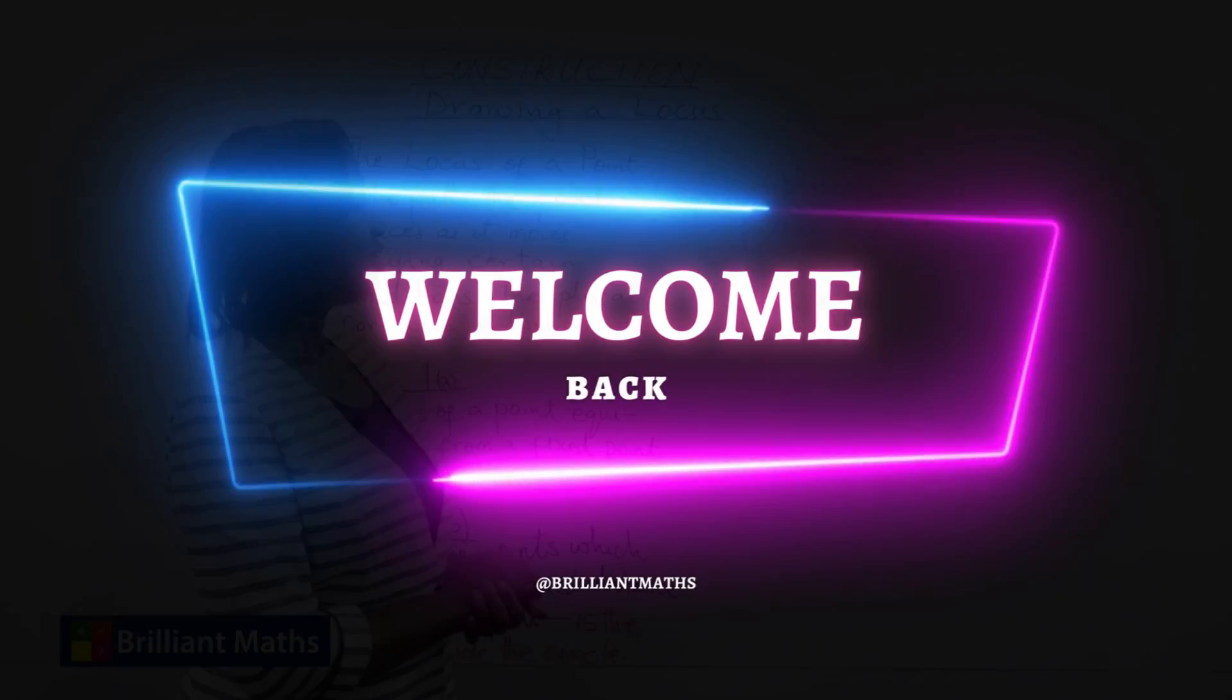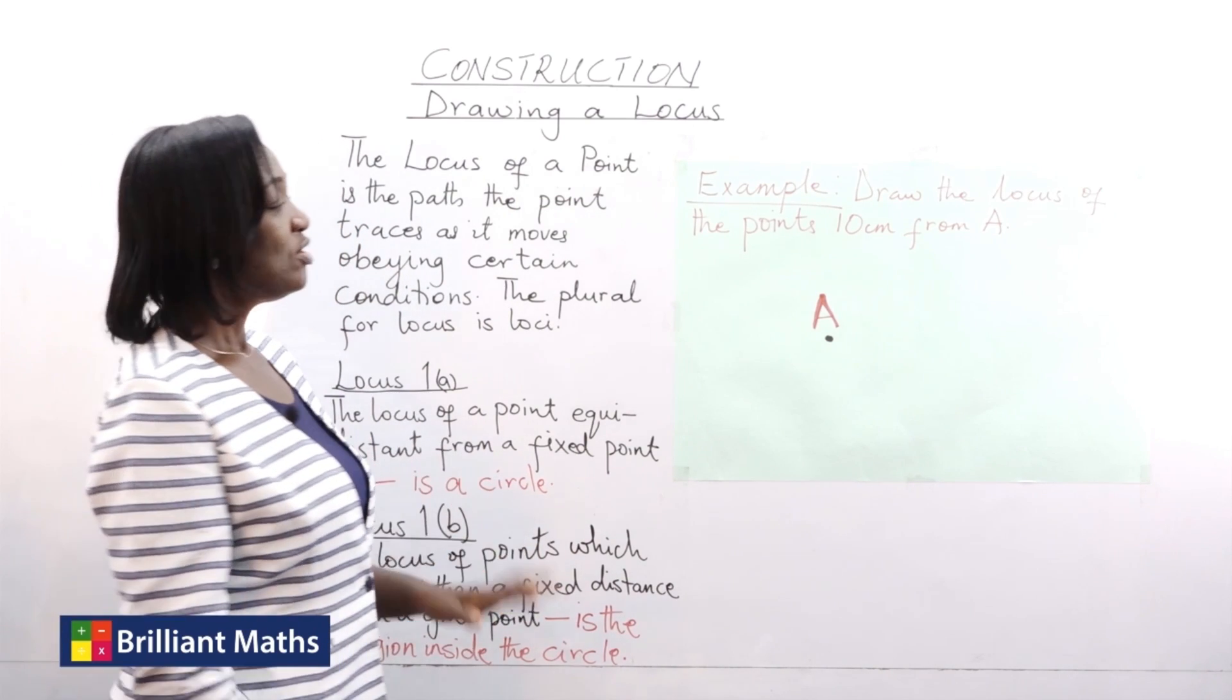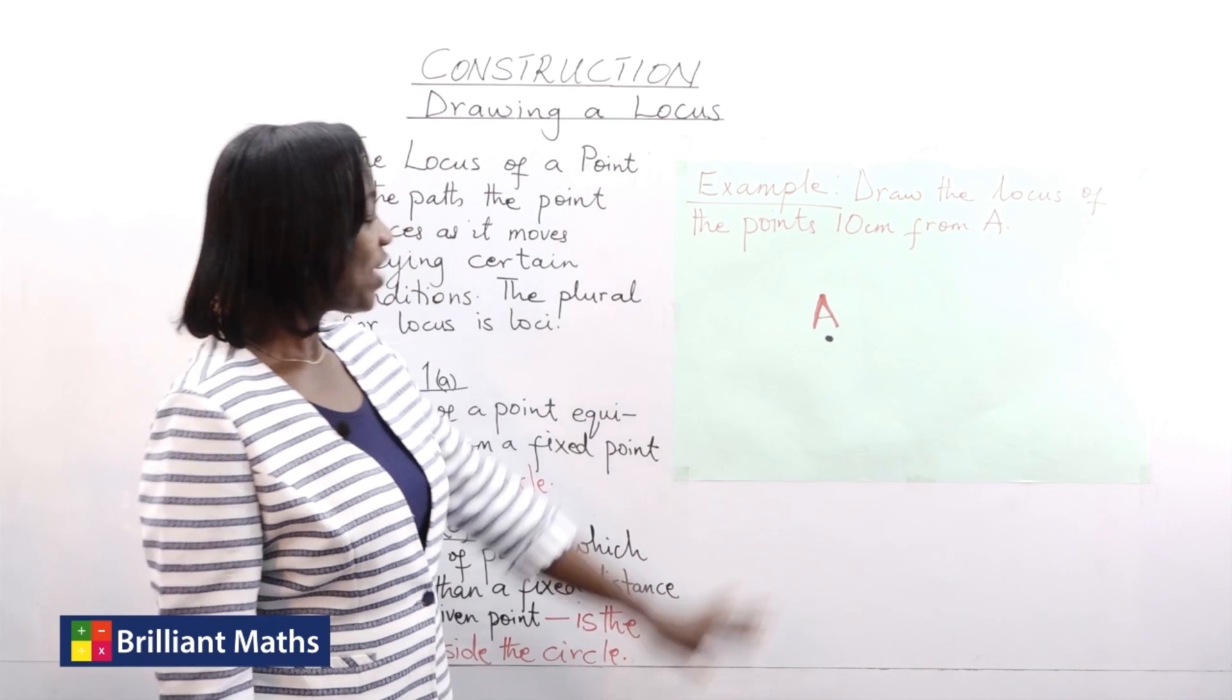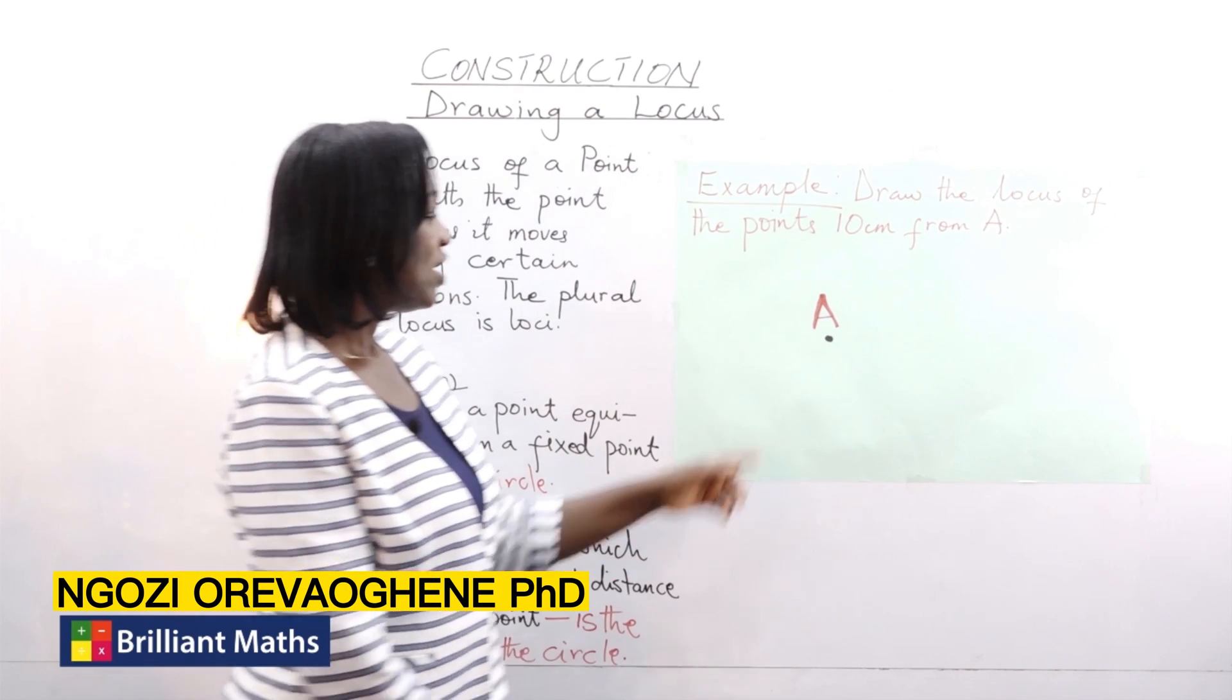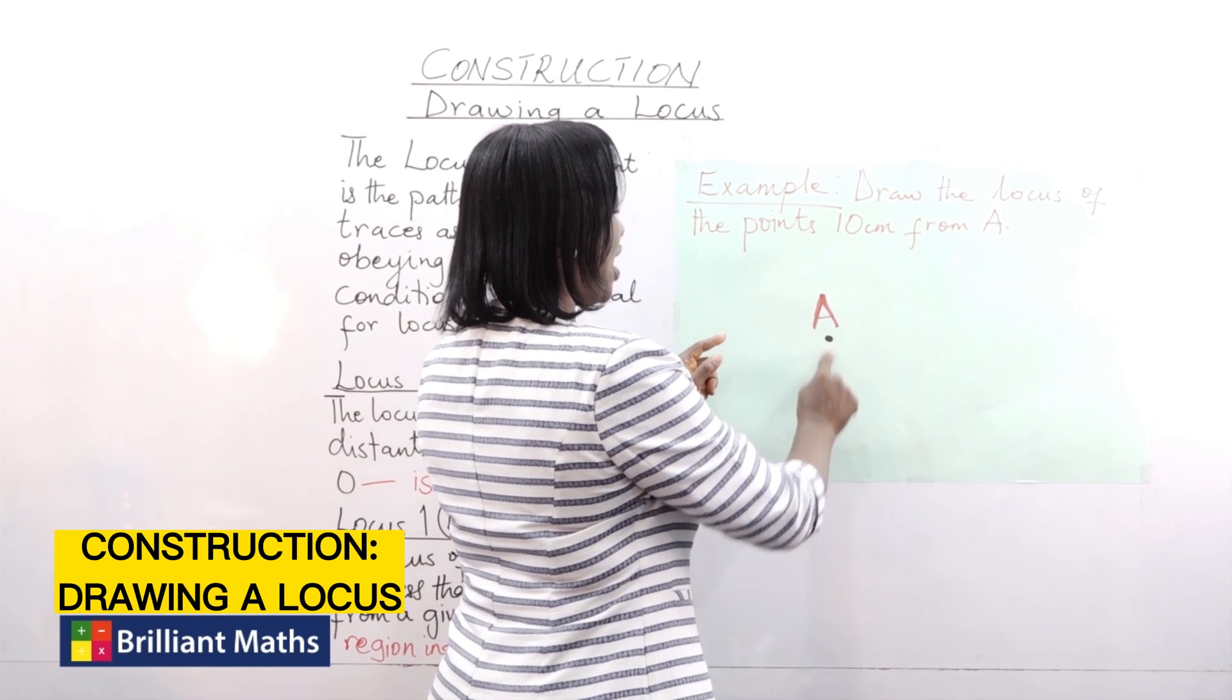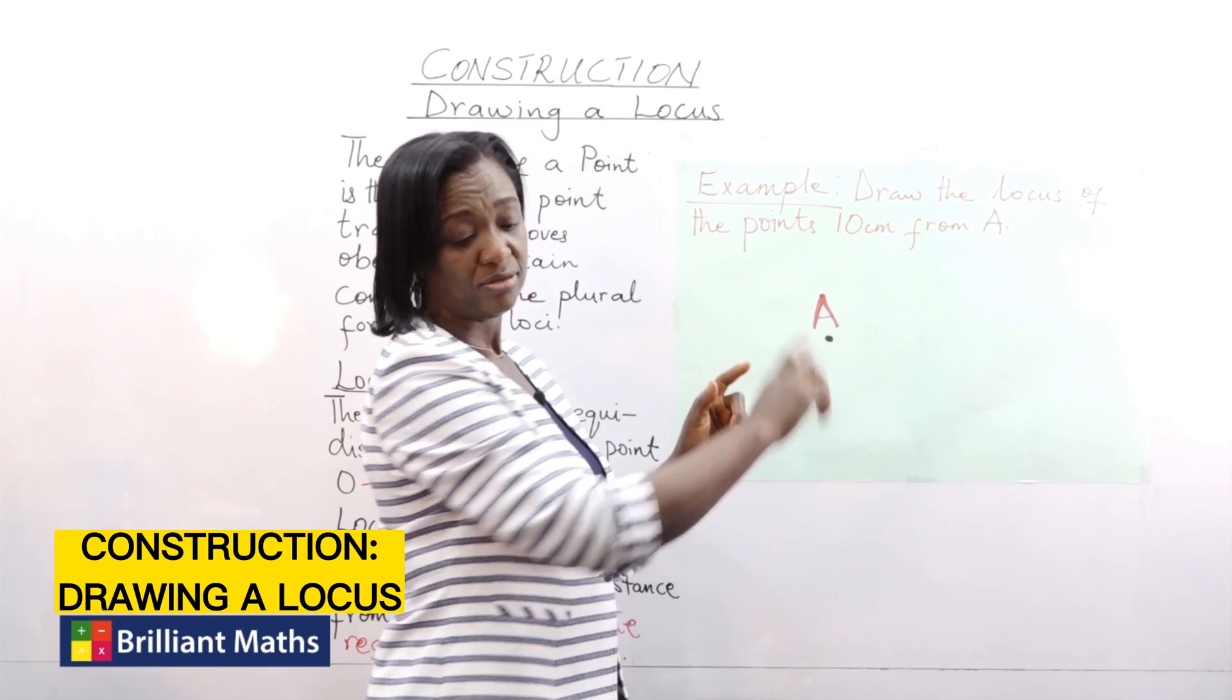That path would be a circle. So, for example, draw the locus of the points 10 centimeters from A. So we have point A there. Locus of points that are 10 centimeters from A means the distance between each of those points and A should be 10 centimeters and what does that look like? It's a circle.